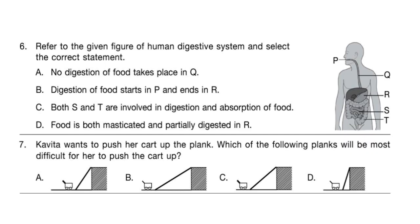Question 7: Kavita wants to push her cart up the plank. Which of the following planks will be most difficult for her to push the cart up? The correct answer is option D.